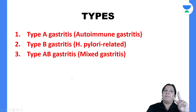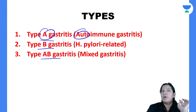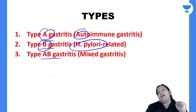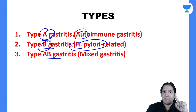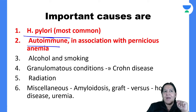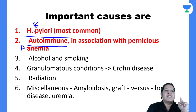More important is chronic gastritis, which is of two types: Type A and Type B. A stands for autoimmune, B stands for bacteria (H. pylori). There is also AB, a mixed type. So the two main causes of chronic gastritis are H. pylori (Type B) and autoimmunity (Type A).